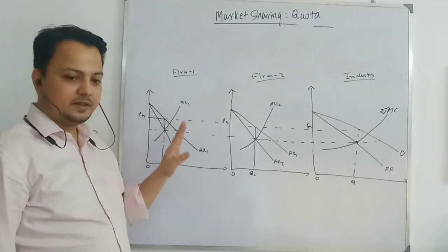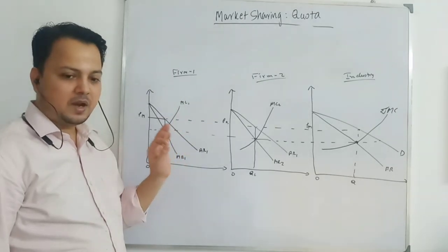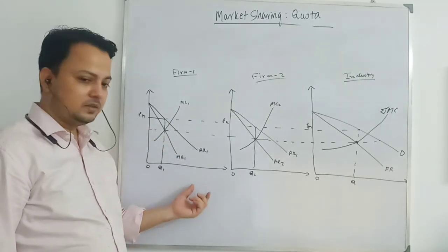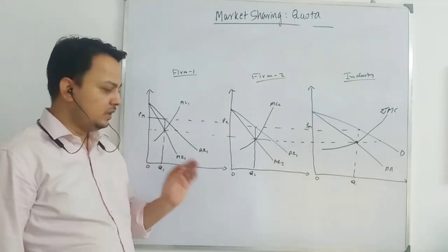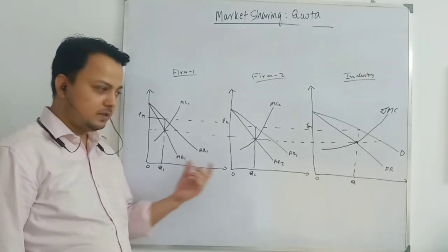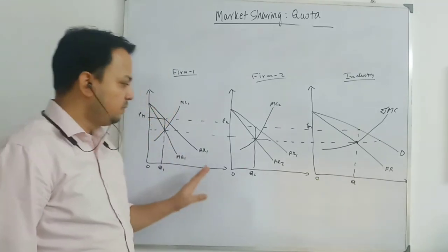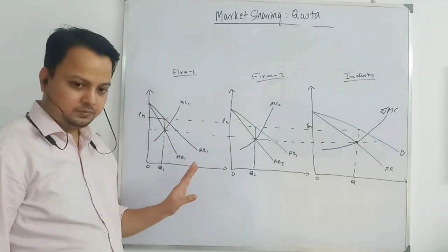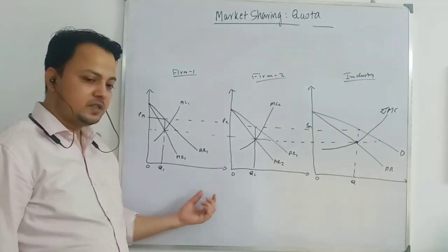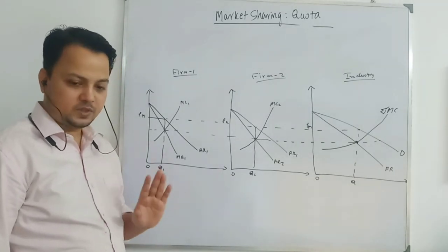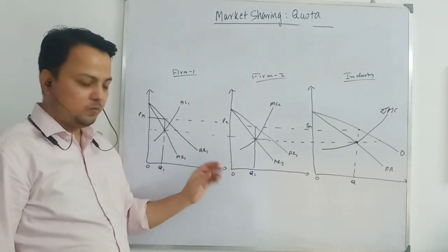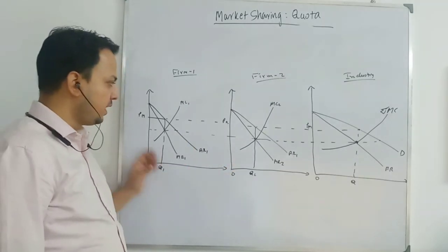Under identical cost and identical demand curves, firm market shares will be the same. The total market output must be shared equally among both firms by setting industry marginal cost equal to the marginal cost of each firm. We are getting the condition where both firms are producing OQ1 output and charging OPM price.